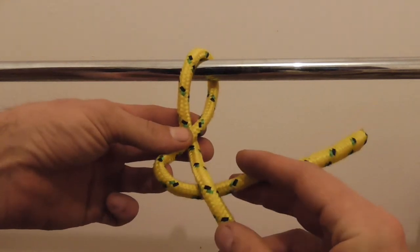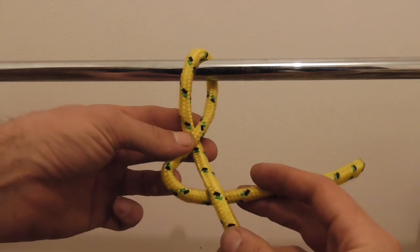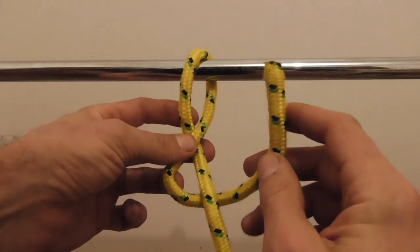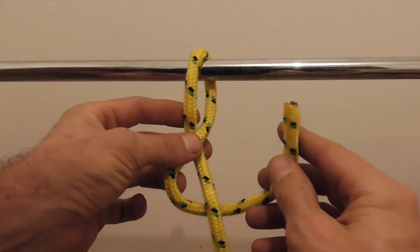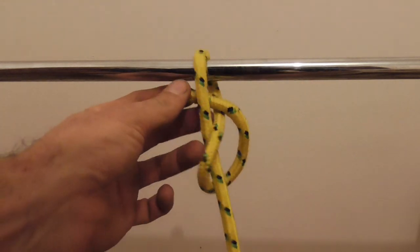so it looks like an 8. Then take the working end and tuck it up through that top loop and pull it tight.